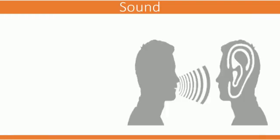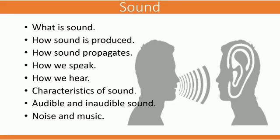In the chapter Sound, we will be studying: What is sound? How is sound produced? How does sound propagate? How do we humans speak and hear? What are the different characteristics of sound by which we can differentiate between two sounds? What are audible and inaudible sounds? What is the difference between noise and music?